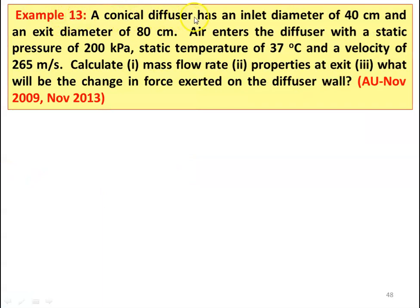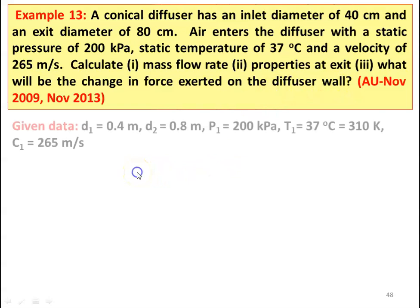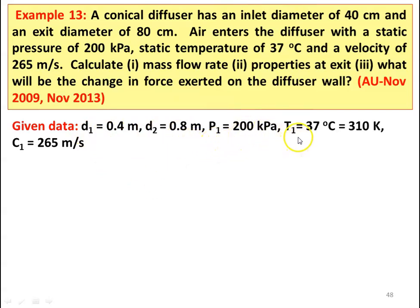Example number 13. A conical diffuser has an inlet diameter of 40 centimeter and an exit diameter of 80 centimeter. Air enters the diffuser with a static pressure of 200 kilo Pascal, static temperature of 37 degree Celsius, and a velocity of 265 meters per second. Calculate the mass flow rate, properties at the exit, and the force exerted on the diffuser wall. This question is from November 2009 and November 2013. Given: D1 equal to 0.4 meter, D2 equal to 0.8 meter, P1 equal to 200 kilo Pascal, T1 equal to 37 degree Celsius which is 310 Kelvin, and C1 equal to 265 meters per second.